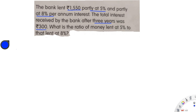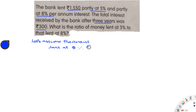We need to find the ratio of money lent at 5% to that lent at 8%. Before finding the ratio, we first need to find the amount of money lent at 5% and the amount lent at 8%. Let us assume the amount lent at 5% as x. Then the amount lent at 8% will be 1550 minus x.